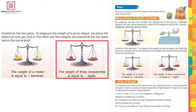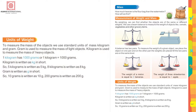To measure the mass of an object, we use standard units of mass: kilogram and gram. Gram is used to measure the mass of light objects, and kilogram is used to measure the mass of heavy objects. One kilogram has one thousand grams — 'kilo' means thousand.